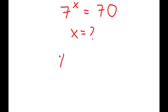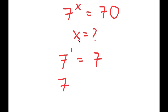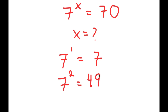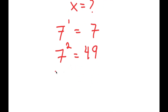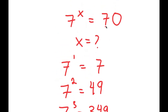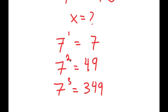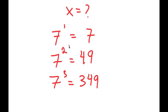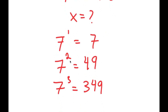Let's try to plug in a number. Starting with 1: 7 to the power of 1 is equal to 7. Let's go higher — 7 to the power of 2 is equal to 49. And 7 to the power of 3 is equal to 349. So we're trying to find what value of x to raise 7 to in order to equal 70, but even 3 gives a number much higher than 70, meaning x is going to be a decimal somewhere between 2 and 3.